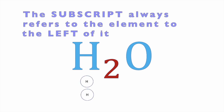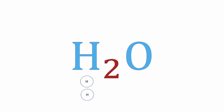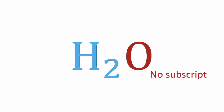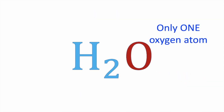The subscript always refers to the element to the left of it — in this case, the H. If there is no subscript, we can assume that there is only one of that type of atom in the formula.